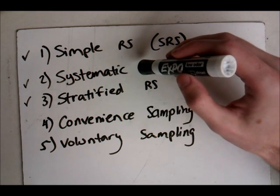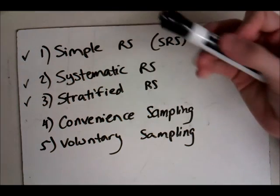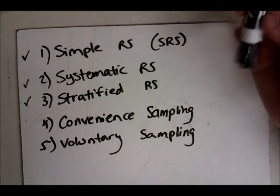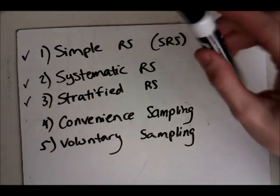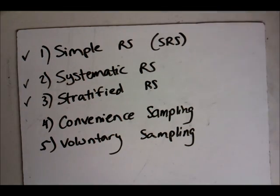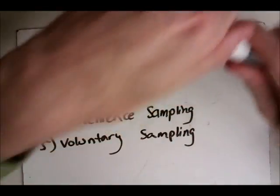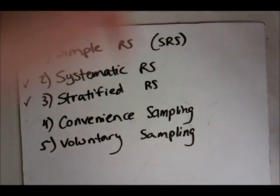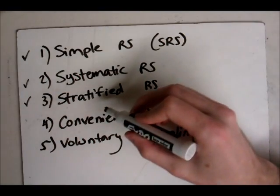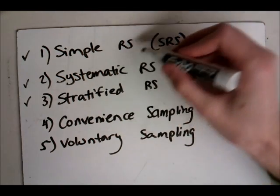Systematic is where you might choose a number at random. Let's say I picked the number five, and then I'd look at every fifth person in my population, and those would be included in my sample.